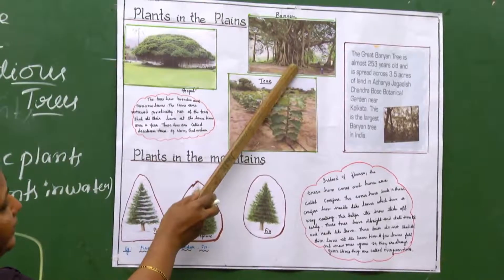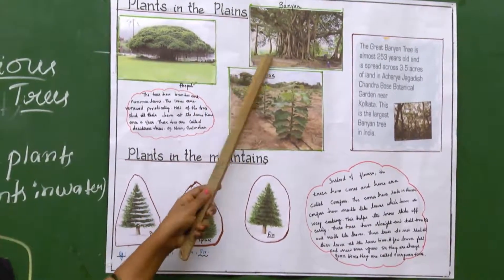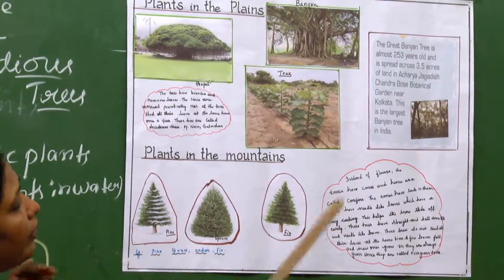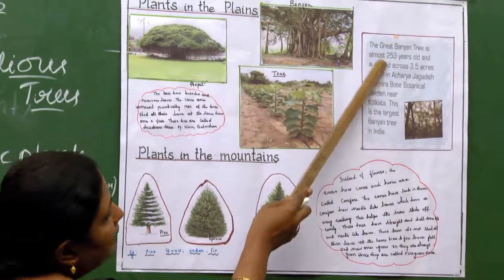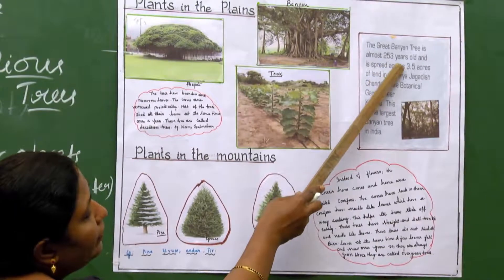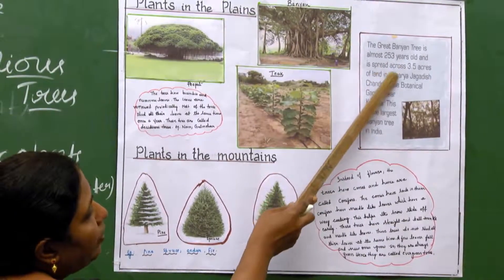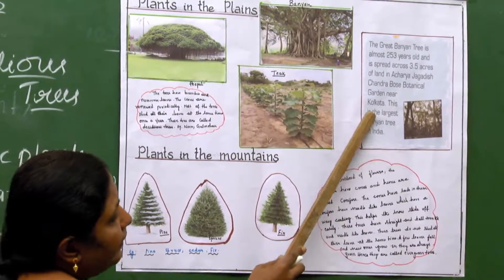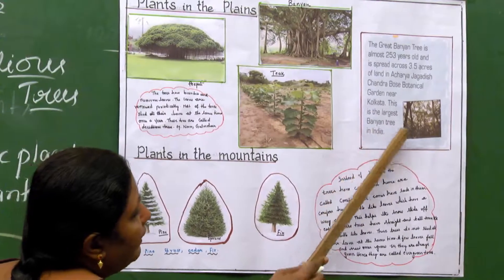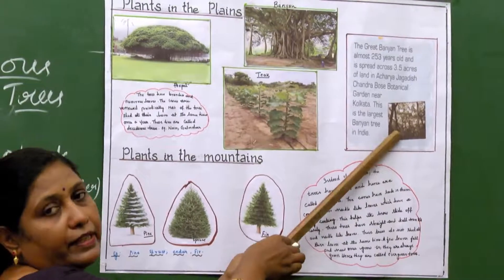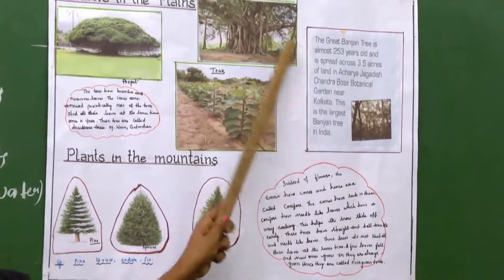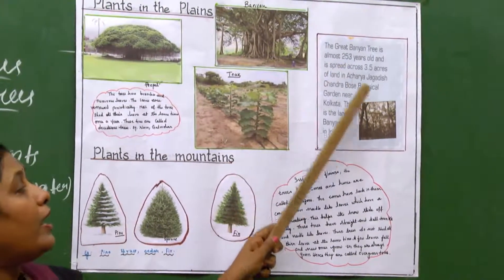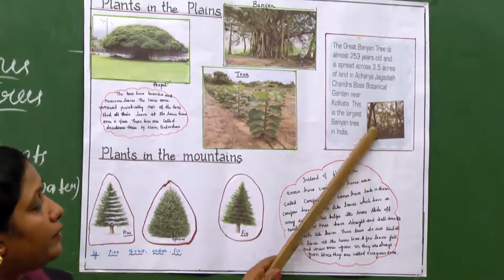A very good example is the people's plant — the banyan tree. You might have heard that the banyan tree has a very long lifespan. There is one record-breaking banyan tree: the great banyan tree is almost 253 years old.